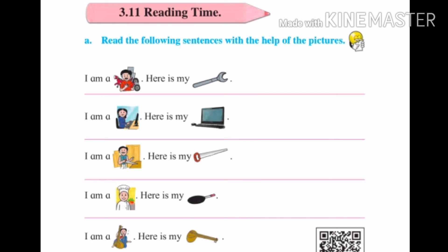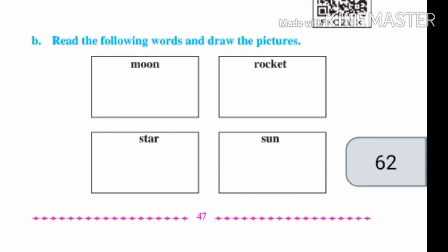Now come to the fifth sentence: I am a musician. Here is my tanpura. Mi ek sangeetkar stri ahi. Ani ha maaz haan tanpura ahi. Musician means sangeetkar, tanpura means ek sangeetik vadya. In the first half of the sentence you can see the lady is playing with tanpura — it means she is a musician. In the remaining half we can see the picture of tanpura, which is an instrument of a musician. So our final sentence is: I am a musician. Here is my tanpura.